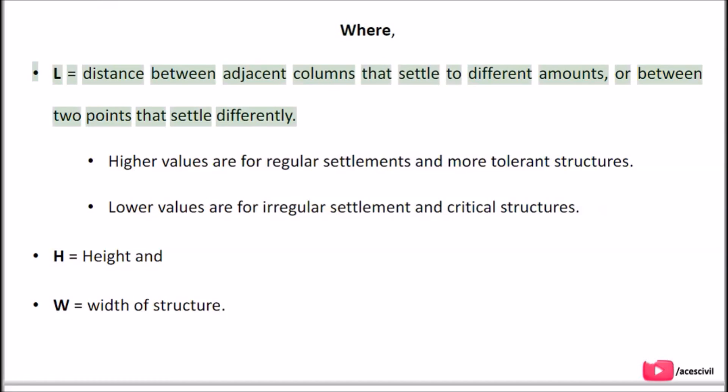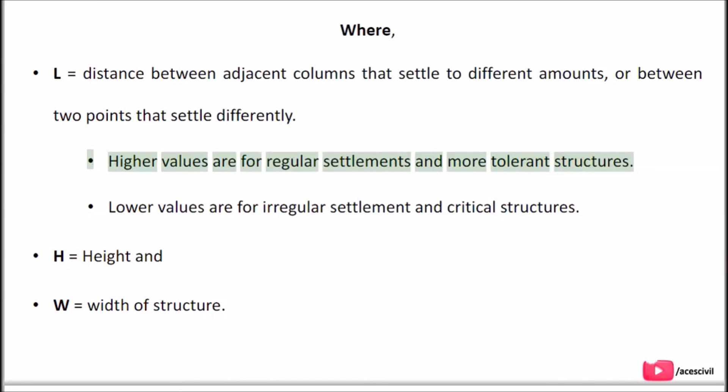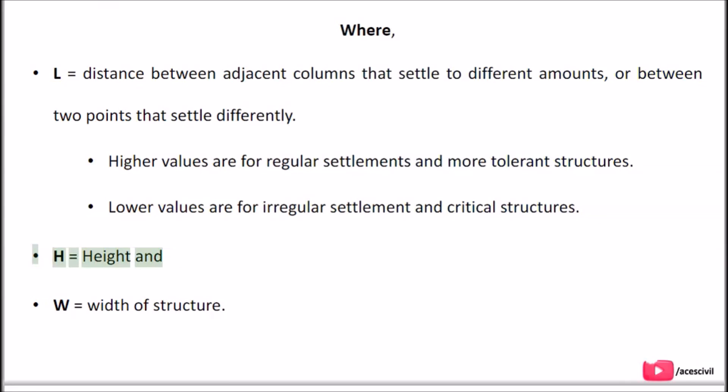Simple steel frame 0.005L. Where L equals the distance between adjacent columns that settle to different amounts, or between two points that settle differently. Higher values are for regular settlements and more tolerant structures. Lower values are for irregular settlement and critical structures. H equals height and W equals width of structure.